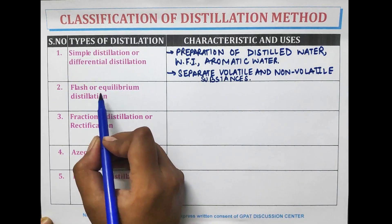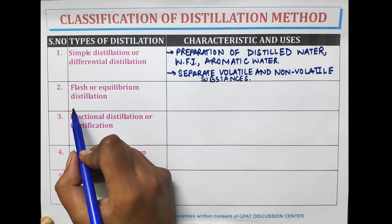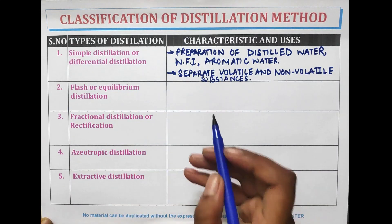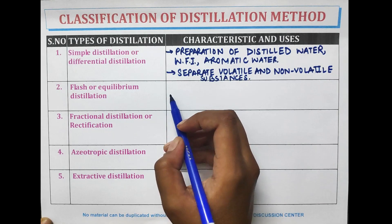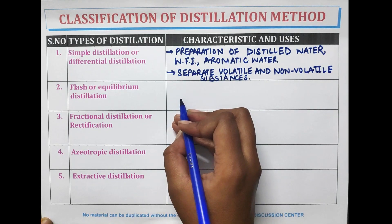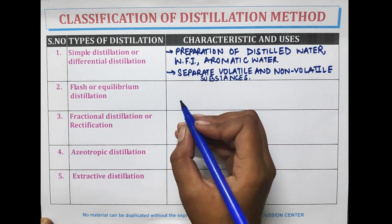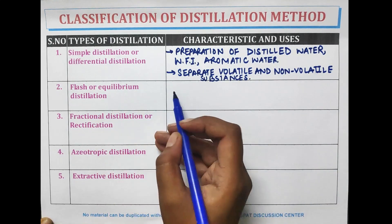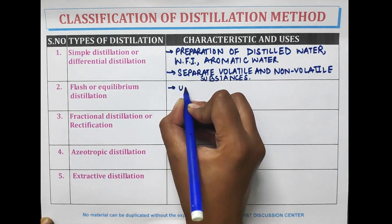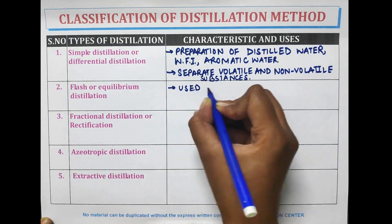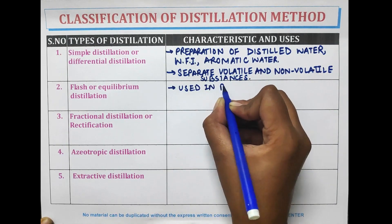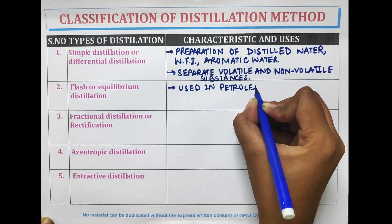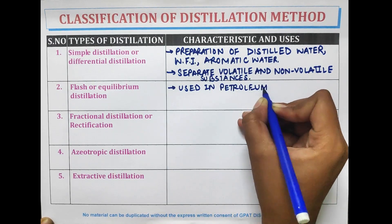Flash or equilibrium distillation is used in petroleum industries for refining crude oil.